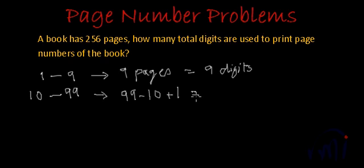There will be 99 minus 10 plus 1. So how many page numbers will be there? There will be total 90 pages and each page will require two digits to print page number on it. So what will be the total number of digits? Total number of digits will be 90 multiplied by 2, that is 180.